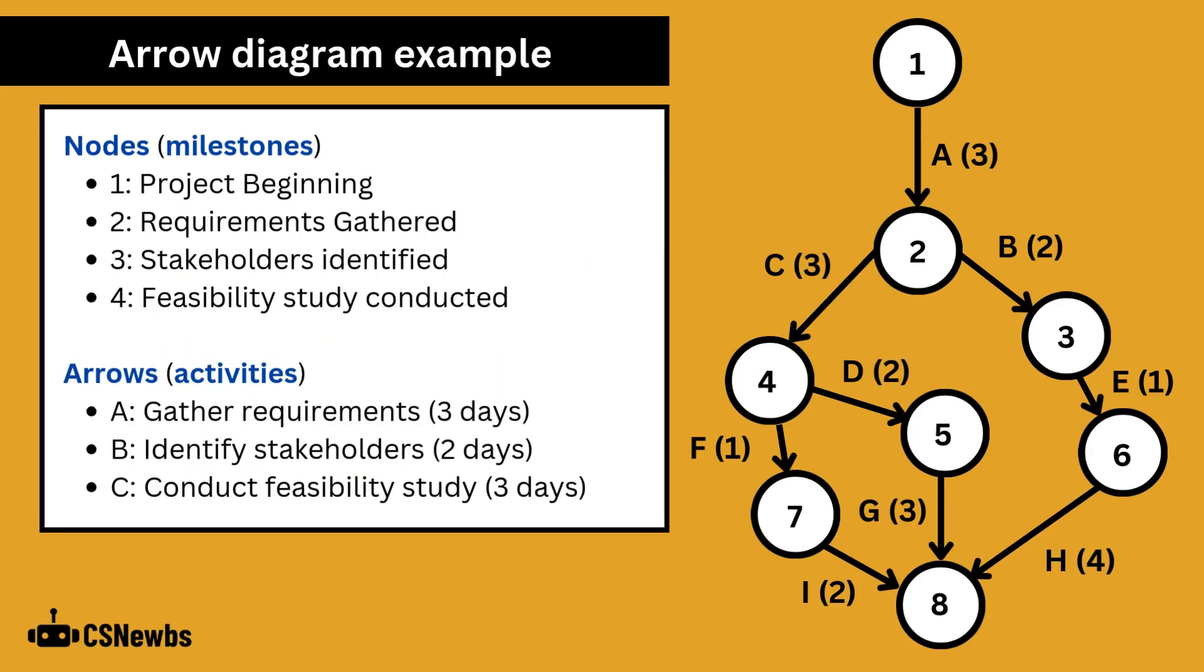The numbers and letters don't mean a lot by themselves. As mentioned the arrows represent activities and the time to complete them and the circles are nodes which are project milestones.